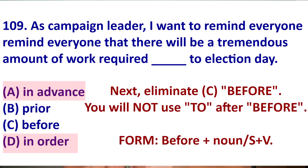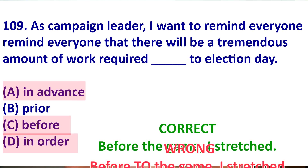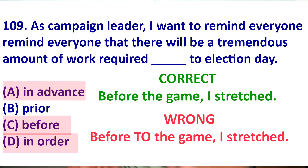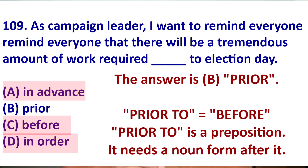So now we have 'before' or 'prior.' The next one we can eliminate is 'before,' and this is because of the preposition 'to.' You say before noun or before subject verb. We don't say 'before to noun.' For example, before the game, I stretched — that is correct. But I don't say 'before to the game, I stretched.' Therefore, the best answer is 'prior.' What does 'prior to' mean?